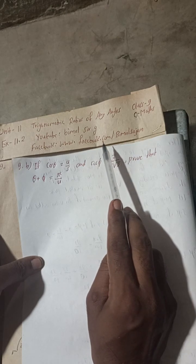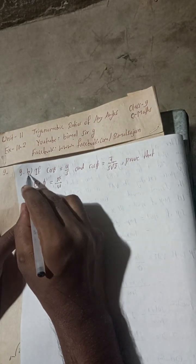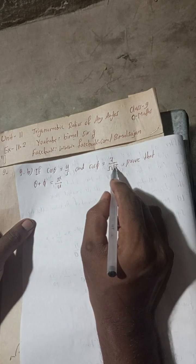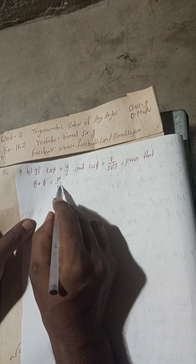So let's begin this solution now. 9b: If cos θ is equal to 4/5 and cos φ is equal to 7/(5√2), prove that θ + φ is equal to π/4.